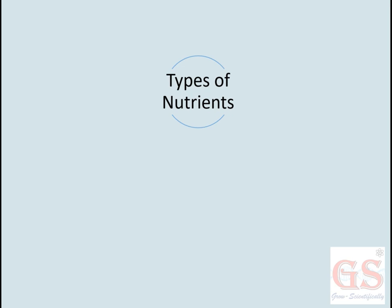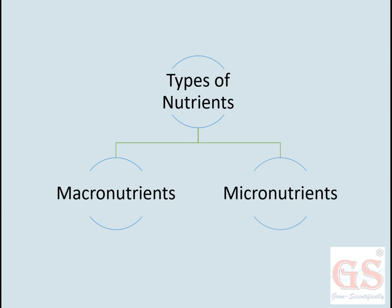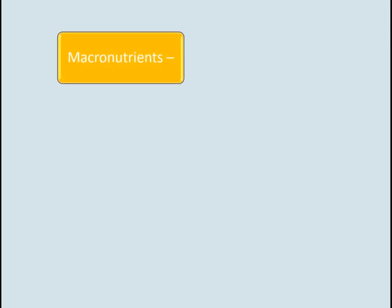There are two major types of nutrients: macronutrients and micronutrients. Macronutrients are those substances which are required in a larger amount in the body, whereas micronutrients are those substances which are required in a smaller amount. Macronutrients consist of carbohydrates, which provide our body with energy for work to be done.